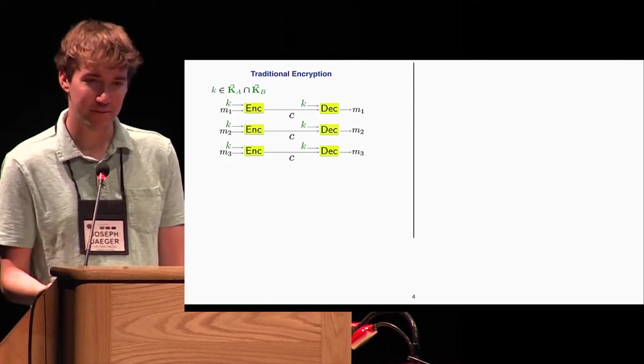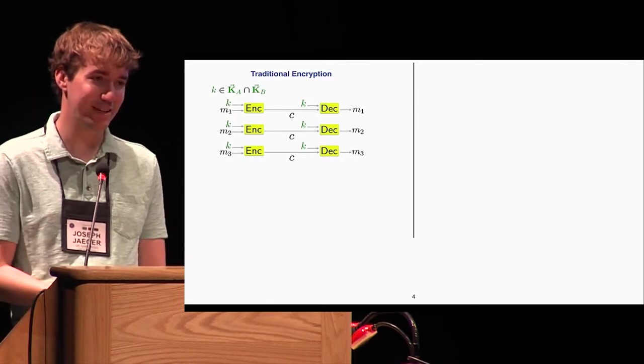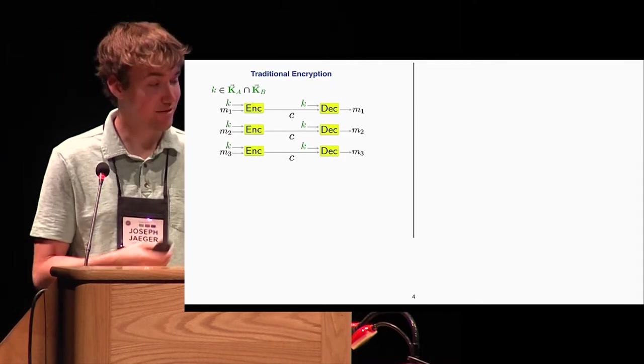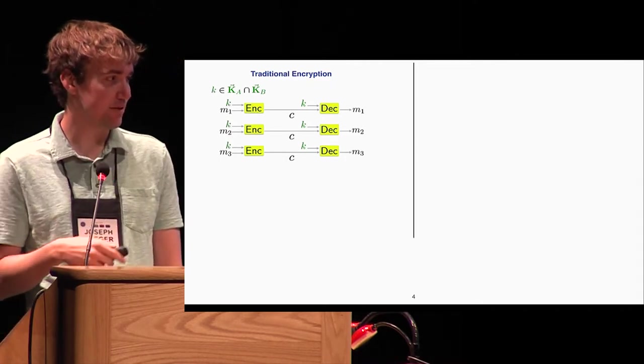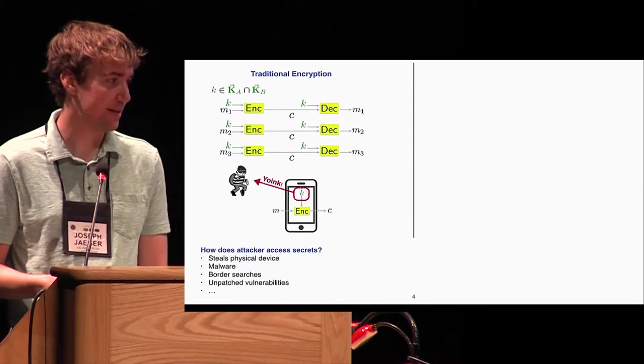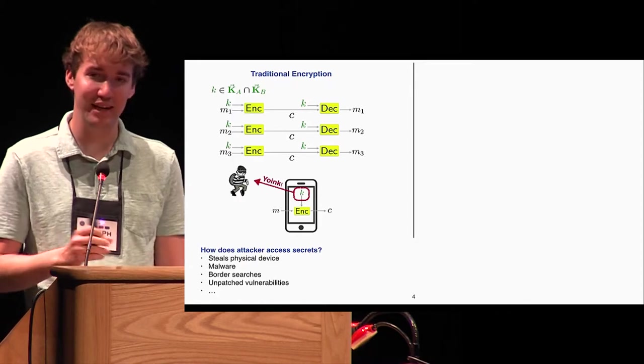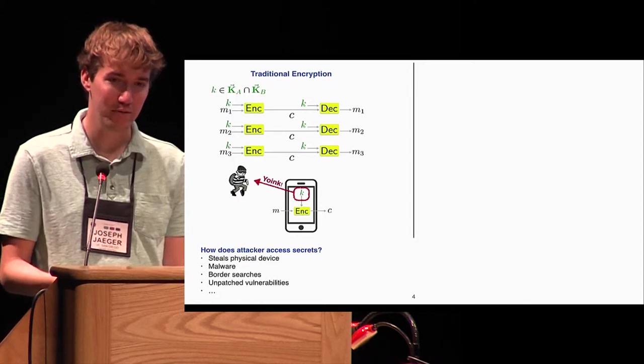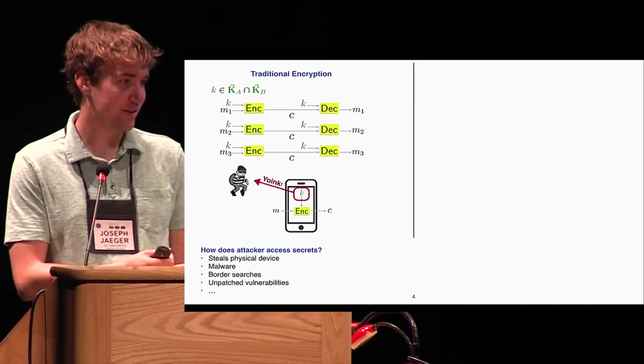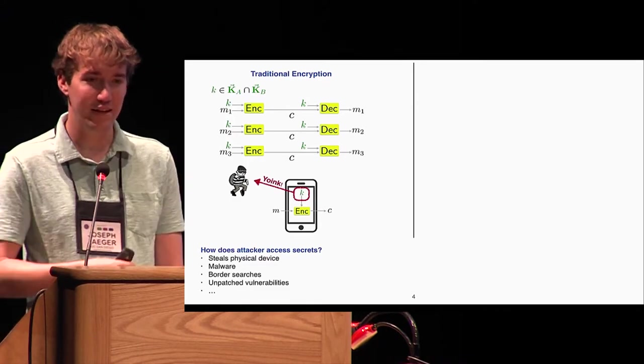If we think about traditional encryption, Alice and Bob will share some key K. Throughout their conversation, they'll encrypt and decrypt all of their communications with this key. But now in the threat of state compromise, some attacker somehow gains access to the secret state on the phone. Given this key K, the security of this communication is completely and irrevocably lost.